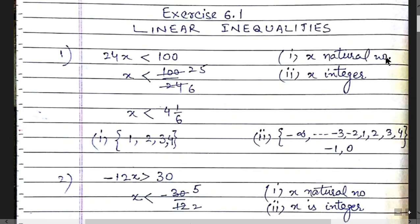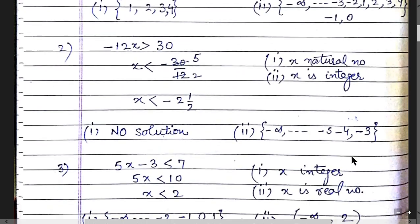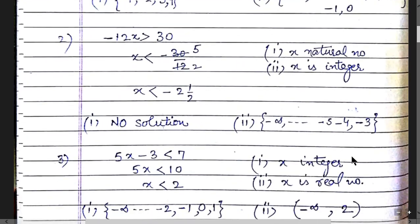If x is a natural number, the values satisfying x < 25/6 are 1, 2, 3, 4. If x is an integer, the values range from minus infinity to 4. A similar approach applies to question number 2.